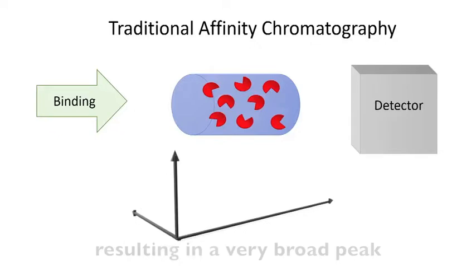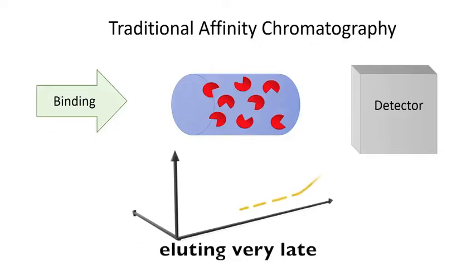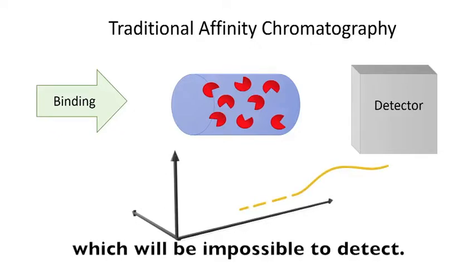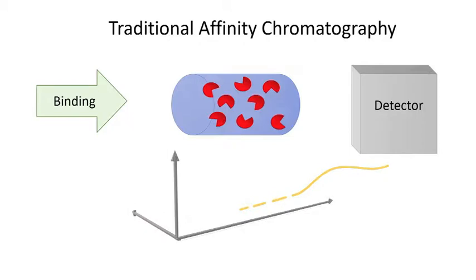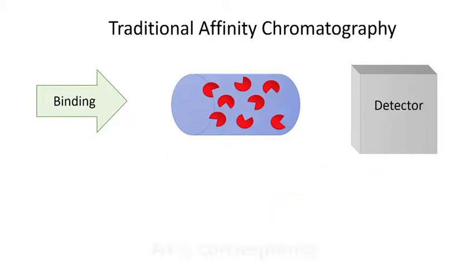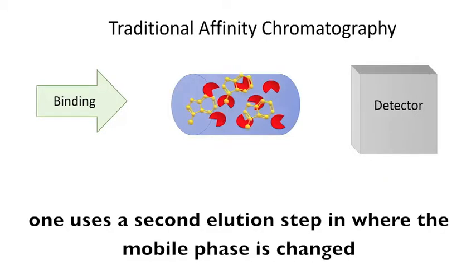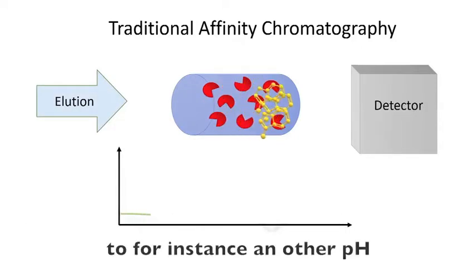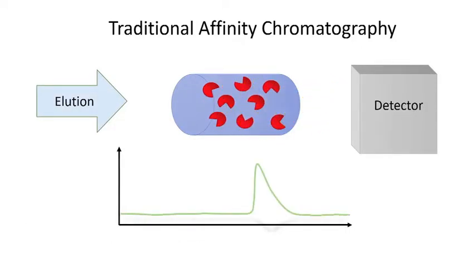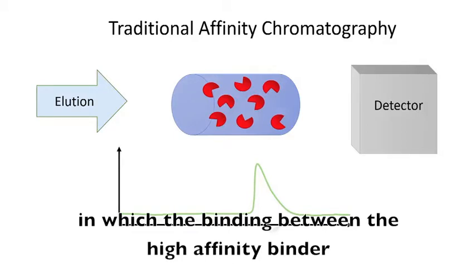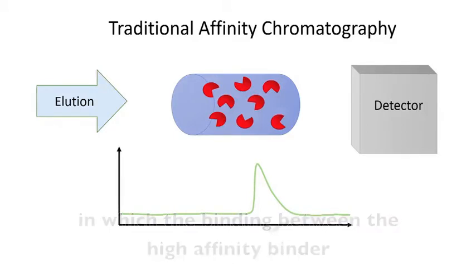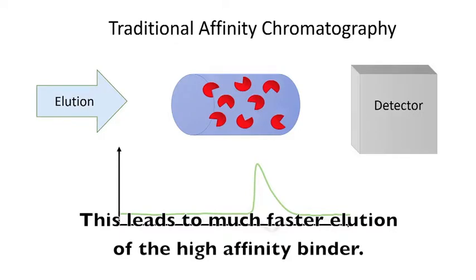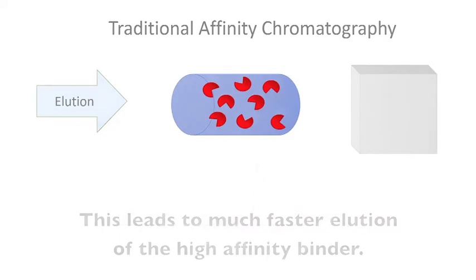This results in a very broad peak eluting very late, which will be impossible to detect. As a consequence, one uses a second elution step where the mobile phase is changed to, for instance, another pH in which the binding between the high affinity binder and the protein is weakened. This leads to much faster elution of the high affinity binder.